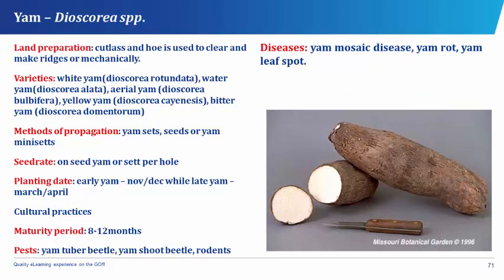Yam, which has its botanical name as Dioscorea species, is a root and tuber crop popularly grown in West Africa and is rich in carbohydrates. Yam has different varieties: the white yam known as Dioscorea rotundata, the water yam known as Dioscorea alata, the aerial yam known as Dioscorea bulbifera, the yellow yam known as Dioscorea cayenensis, and the bitter yam known as Dioscorea dumetorum. The method of propagation of yam is by yam sets, yam seeds, or yam mini sets, with one seed yam or set per hole.